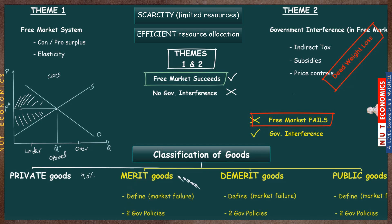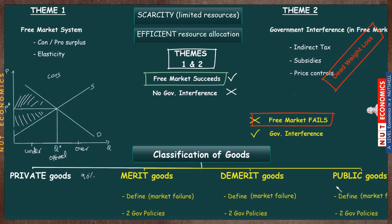That is basically the background. Once we build this understanding of the finer details of each of these different goods, remind yourself of this particular structure, take a step back every now and then, and look at this bigger picture — then these exam questions will make a lot more sense. We start off by discussing private and public goods, including why private goods lead to market success. More on that in the next videos.